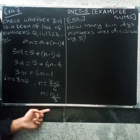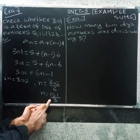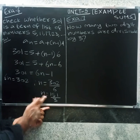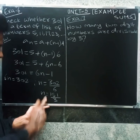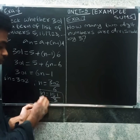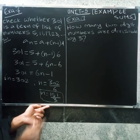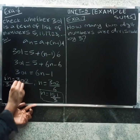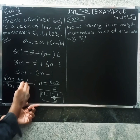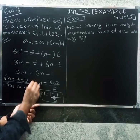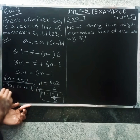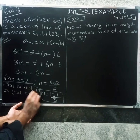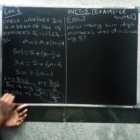Since n = 151/3 is a fraction, and n must be a whole number — for example, the third term, fourth term, sixth term, tenth term are all whole numbers — 301 is not a term of the given AP.